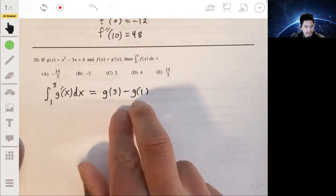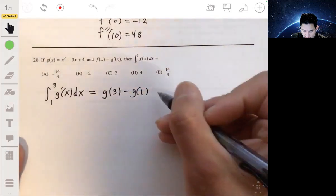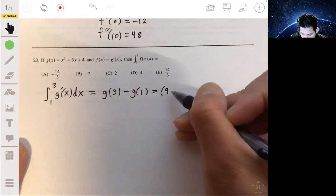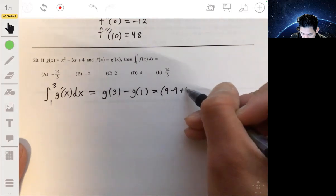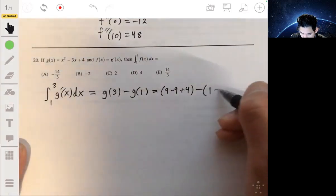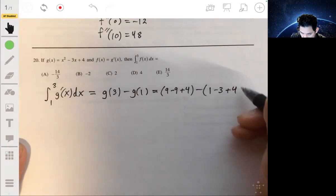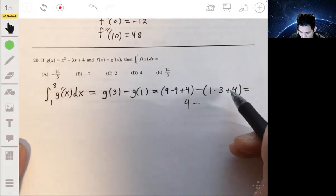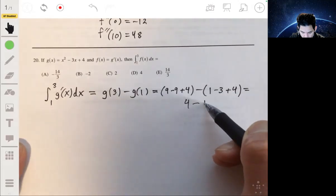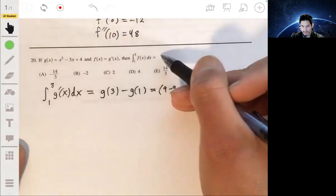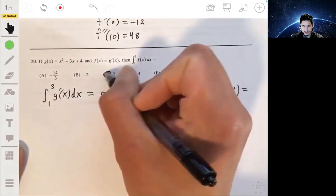So then we just evaluate this. We just figure out what this is. Plug 3 into here. 9 minus 9 plus 4. Minus plug in 1 into there. 1 minus 3 plus 4. We get 4 minus 2. The answer is 2. And so this is equal to 2, and that's it. The answer is C.